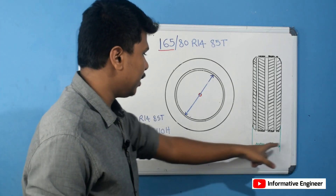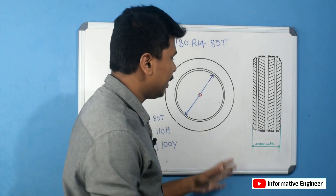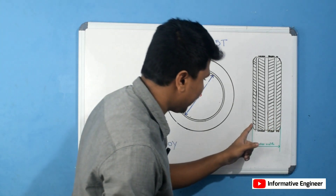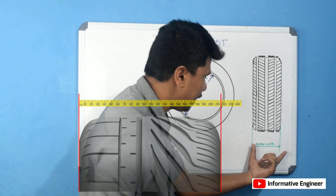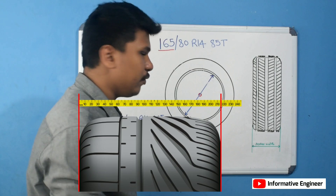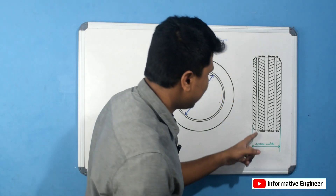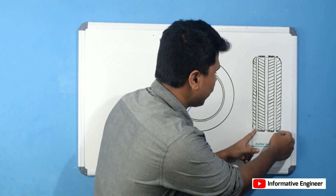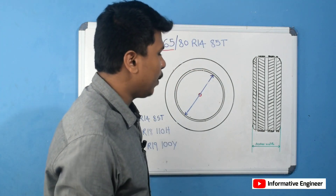The first section here is the section width. The sidewall-to-sidewall distance is the section width — this means the section width. The tread is also part of the overall width measurement.